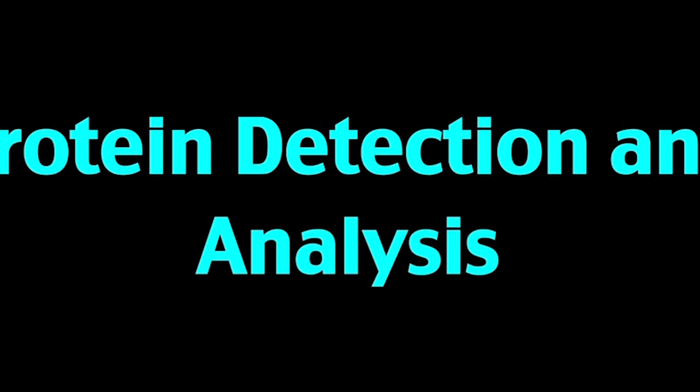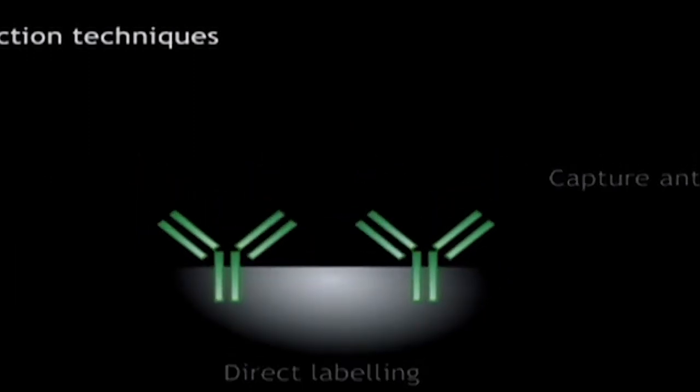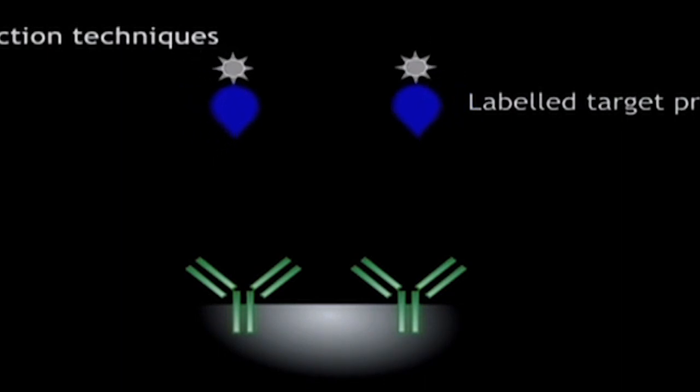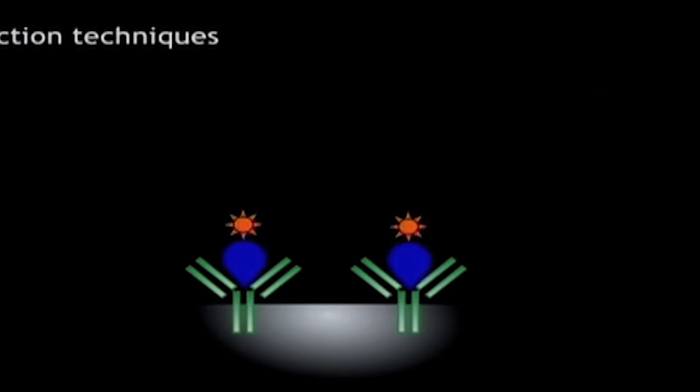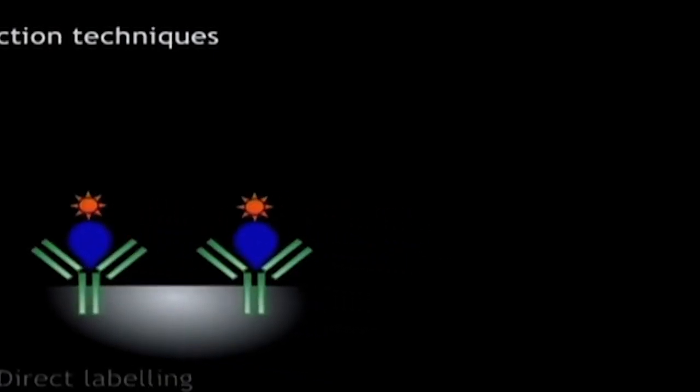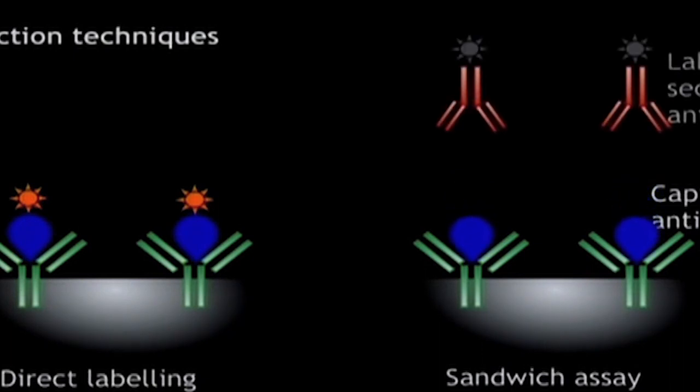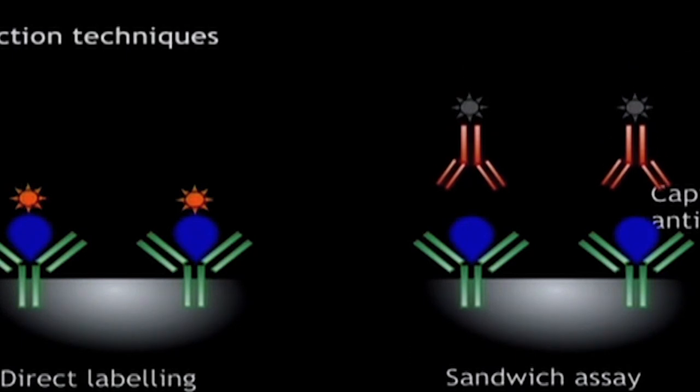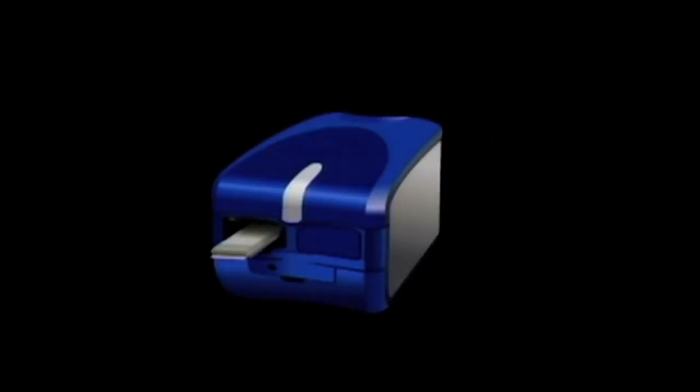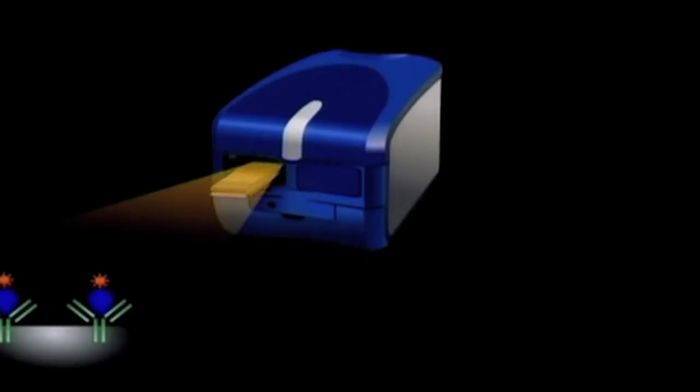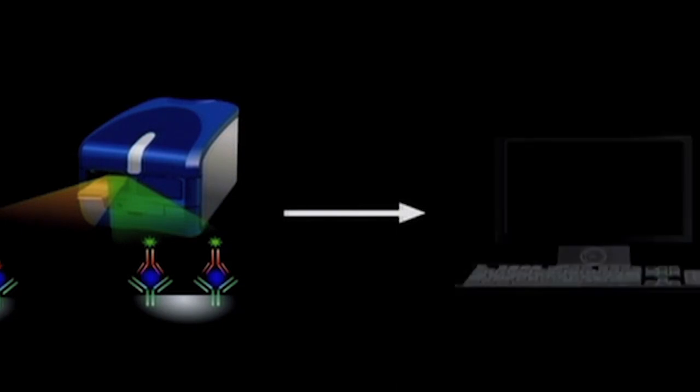Protein detection and analysis. In direct labeling detection techniques, all the target proteins are labeled with a fluorescent or radioactive tag that facilitates easy detection upon binding to the immobilized capture antibody on the array surface. In the sandwich assay, a fluorescent-tagged secondary antibody that recognizes a different epitope on the target antigen binds to it and is detected by means of fluorescence. The protein microarrays are then scanned in a microarray scanner that allows detection of the fluorescently labeled proteins or antibodies. The output from the scanner is received by the software from which data can be further analyzed.